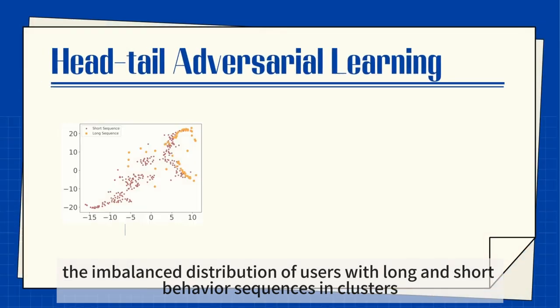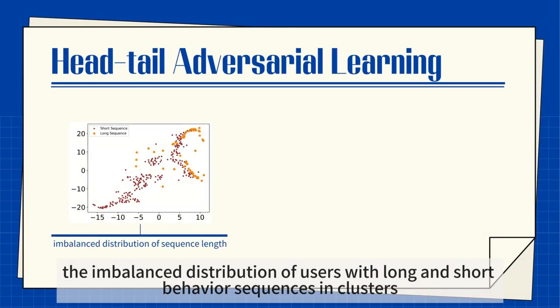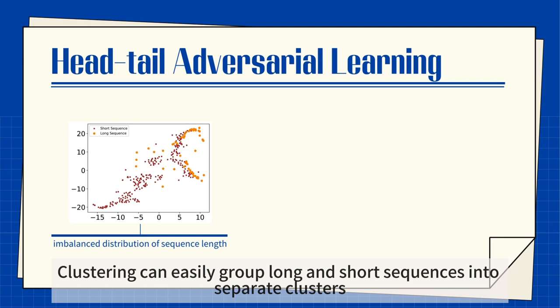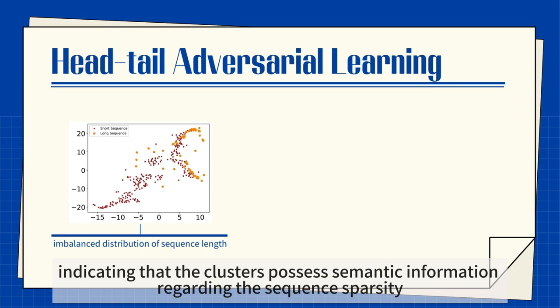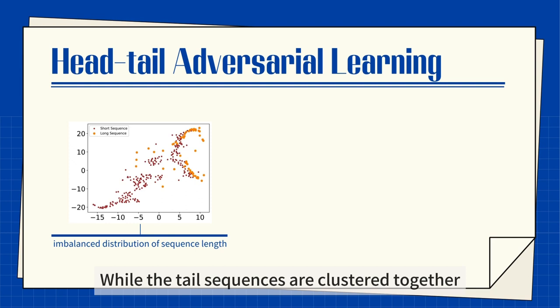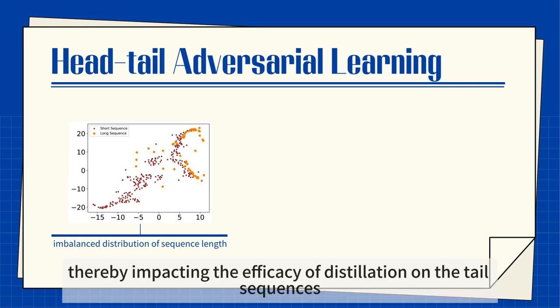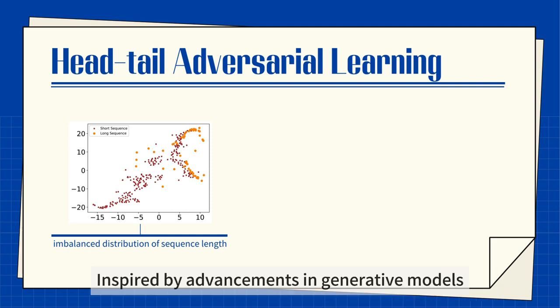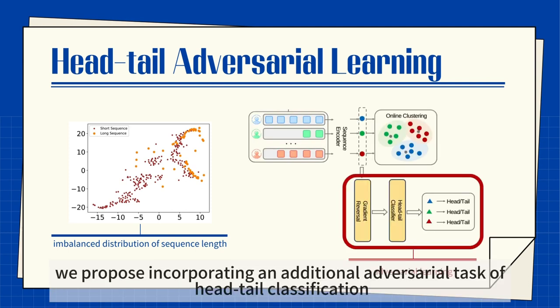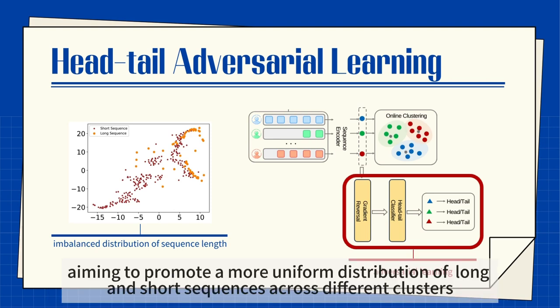Challenge 3: The Imbalanced Distribution of Users with Long and Short Behavior Sequences in Clusters. Clustering can easily group long and short sequences into separate clusters, indicating that clusters possess semantic information regarding sequence sparsity. While tail sequences are clustered together, the information within the cluster would be very sparse, thereby impacting the efficacy of distillation on tail sequences. Inspired by advancements in generative models, we propose incorporating an additional adversarial task of head-tail classification, aiming to promote a more uniform distribution of long and short sequences across different clusters.